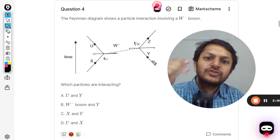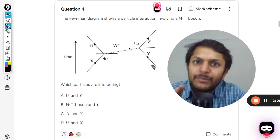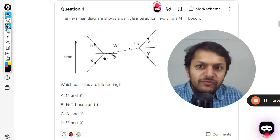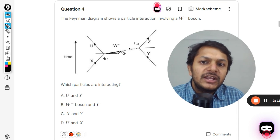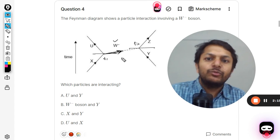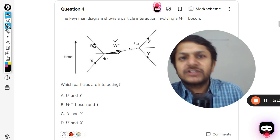So at t1, X is coming and Y was also coming, but nothing was happening to Y at that time. X was coming at t1 and X broke down into two particles. It gave W negative boson outside and U was created. So X was converted into U and W negative boson was also created.